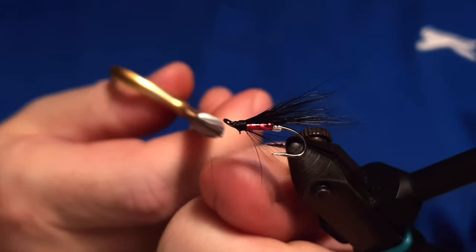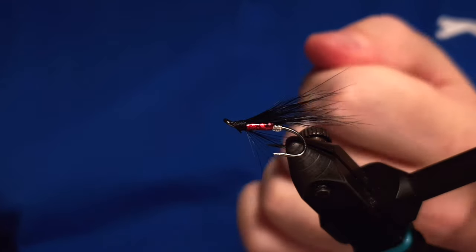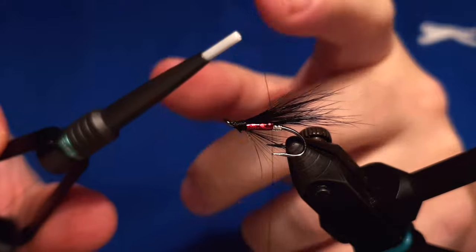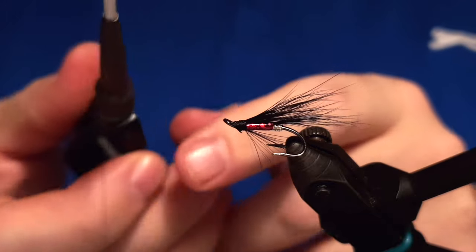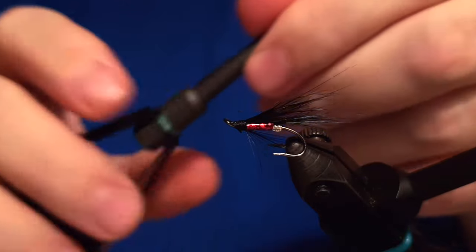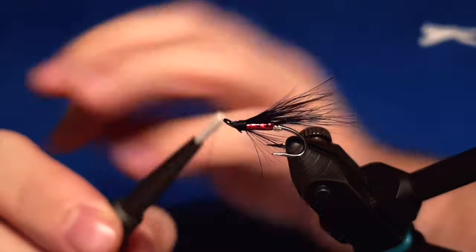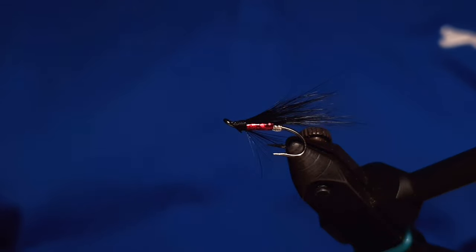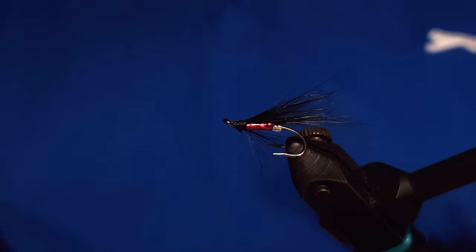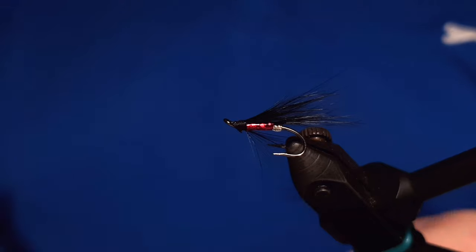And this is a pretty strong fly. Some people ask me why I'm not putting varnish on the thread while I'm just tying and the reason is simple. I don't want to get any varnish into the ceramic bobbins I have.